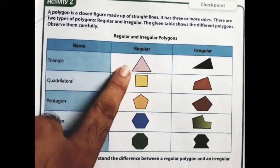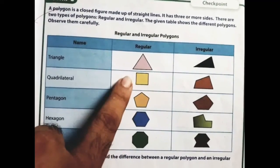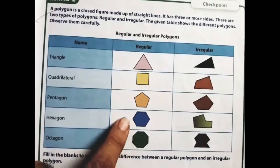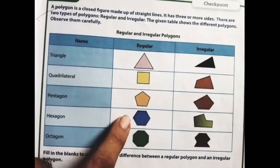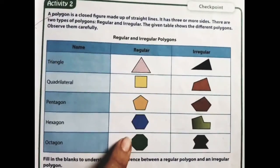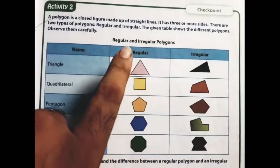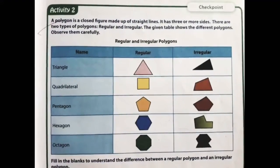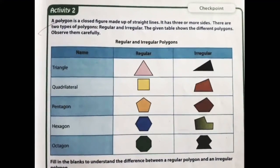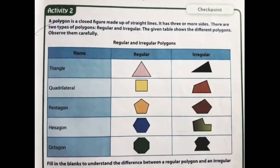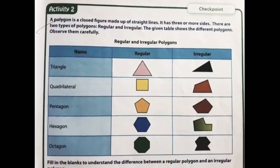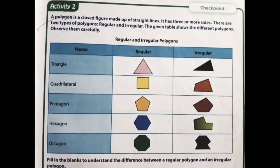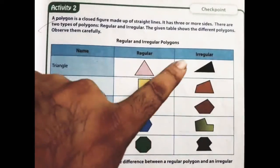In a regular polygon, the length of each side and the measure of each angle are equal. So all sides and all angles are equal — in a square, in a pentagon, in a hexagon, and in an octagon as well. When all the sides and all the angles are equal, those polygons are called regular polygons. If the side or angle or both are different, those polygons are called irregular polygons.